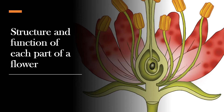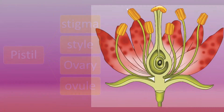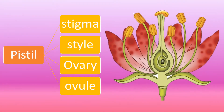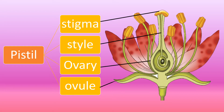First, we study about the structure and function of each part of a flower. This is the pistil, the female part of a flower. The pistil consists of stigma, style, ovary, and ovule.